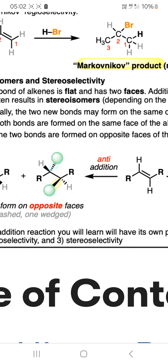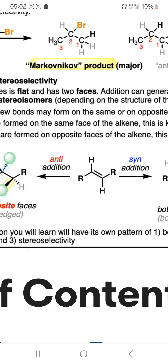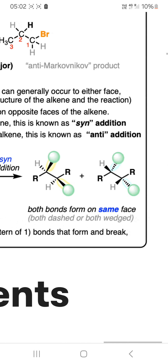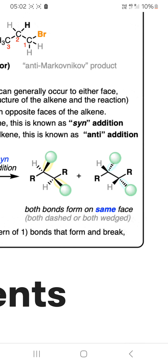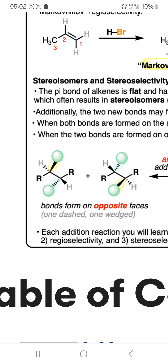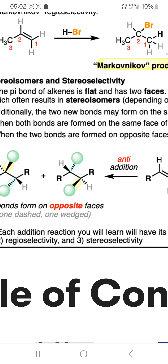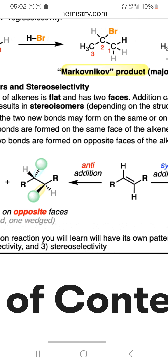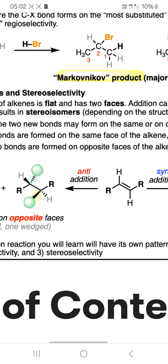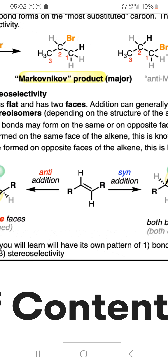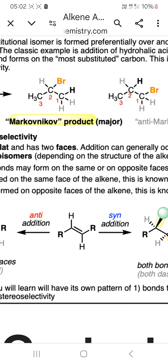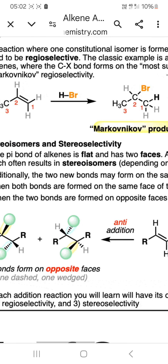For each addition reaction you will learn, pay attention to the pattern of bonds that form and break, as well as regioselectivity and stereoselectivity. Remember, the Markovnikov product is the important example of regioselectivity, and syn versus anti addition is the key concept in stereoselectivity.